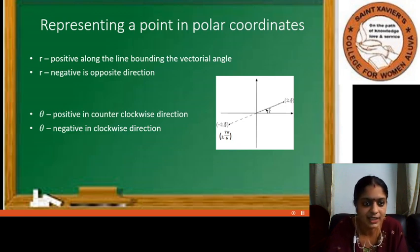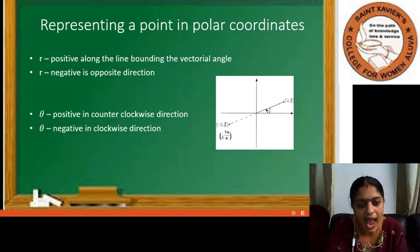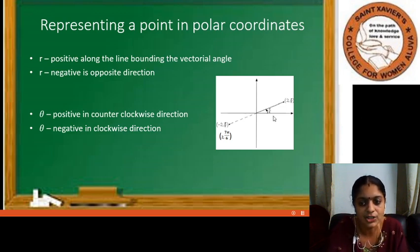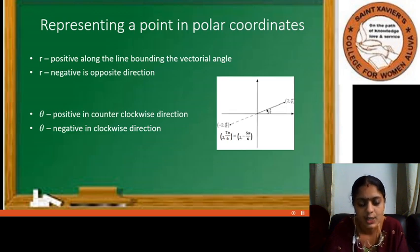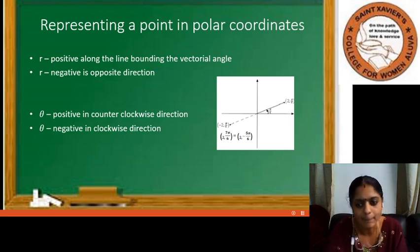That is regarding the direction of R, which determines its sign. Coming to theta, when theta is measured in the anti-clockwise direction, that is counter-clockwise direction, it is positive. And when it is measured in the clockwise direction, it is taken as negative. So this angle is 7pi/6 when measured in counter-clockwise direction. And if we measure in clockwise direction, this angle is pi minus pi/6, that is 5pi/6. Since it is measured in clockwise direction, it will be negative, so it is the same as minus 5pi/6. So the same point can also be represented as (2, -5pi/6).